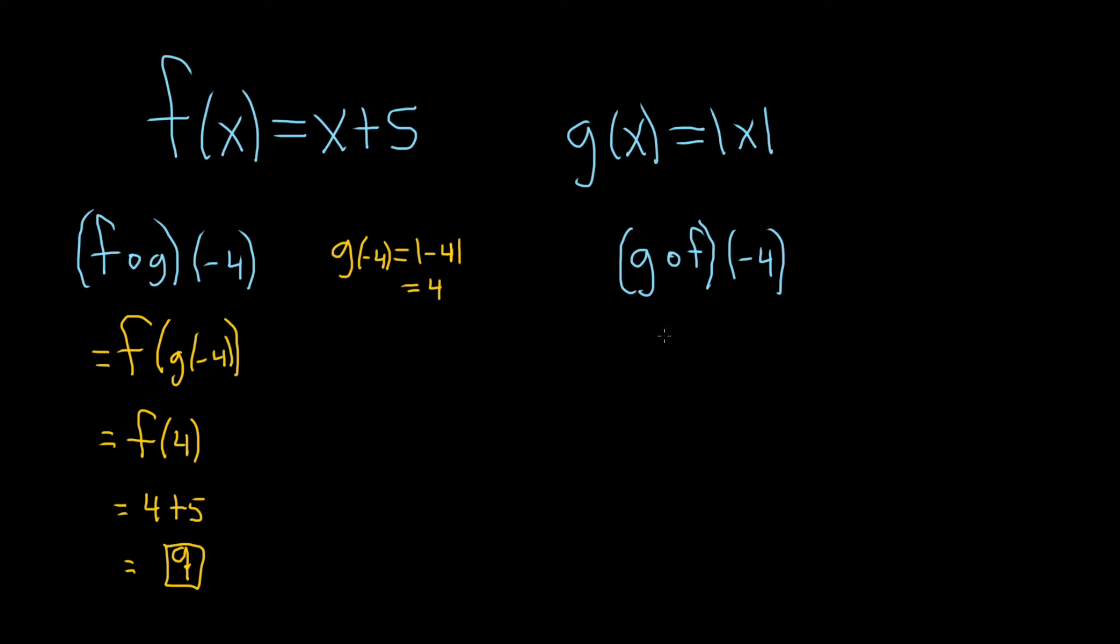Let's go ahead and do this one here. So this one is the same as g of f of negative 4. And it's just left to right. So you just write it like this, g of f of negative 4.